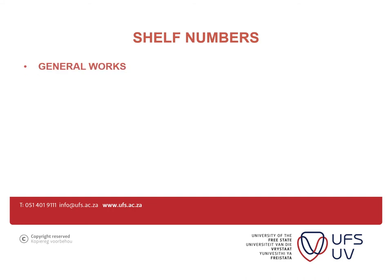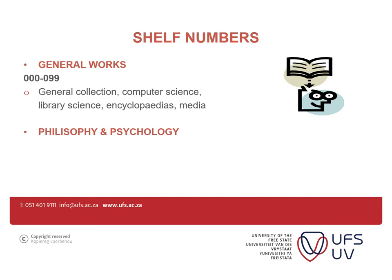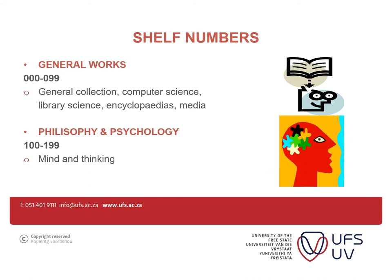On this slide, I'm going to continue talking about shelf numbers, explaining them according to subjects. We have 000 to 900. Starting with 000 to 099, which is general works — including general collection, computer science, library science, encyclopedia, and media. For those doing computer science, you will find your books at 003 to 009. The next range is 100 to 199, which is philosophy and psychology. For those doing psychology, you'll find your books from 150 to 159.